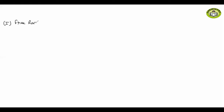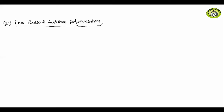The first type of mechanism is free radical addition polymerization. All polymerization reactions consist of three steps. The first step is the chain initiation step.